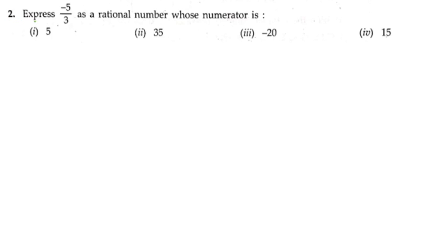Second problem: express minus five by three as a rational number whose numerator is given. We have one rational number and we need to express it with a specific numerator. When we change the numerator, it automatically changes the denominator also. So let us start the solution.